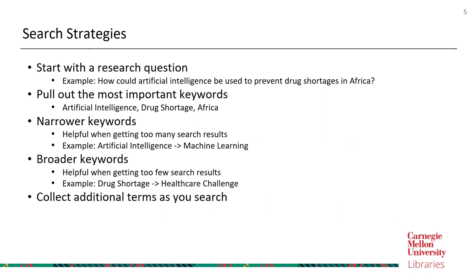Next, let's talk about effective search strategies for searching in academic databases. The first step is to always start with a concrete, detailed research question. For example: 'How could artificial intelligence be used to prevent drug shortages in Africa?' After forming your research question, pull out the most important keywords — in this case: artificial intelligence, drug shortage, and Africa.